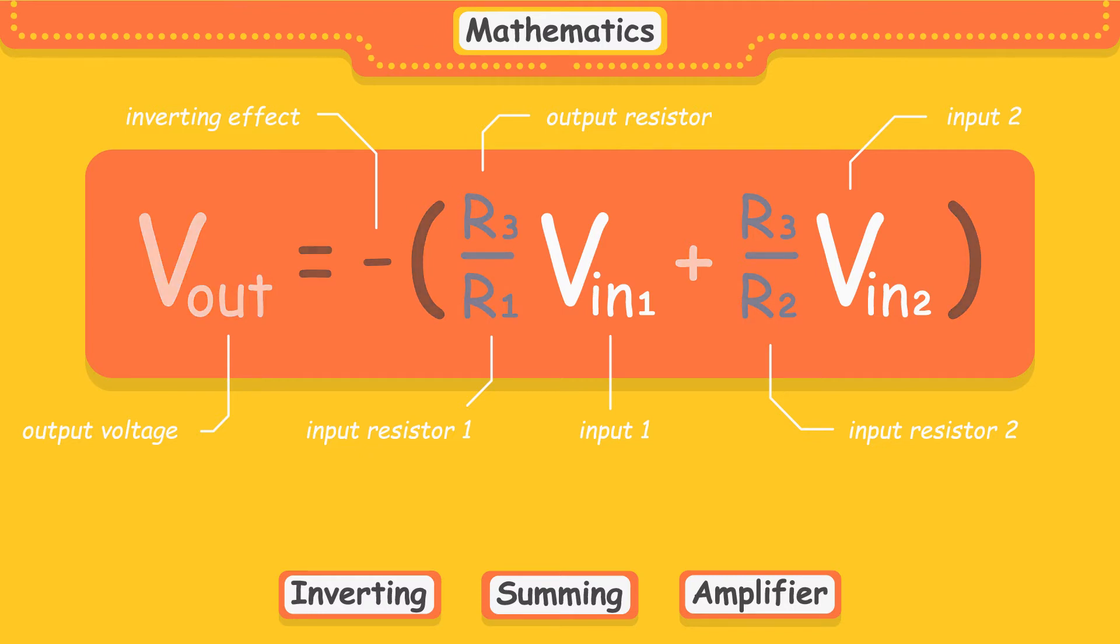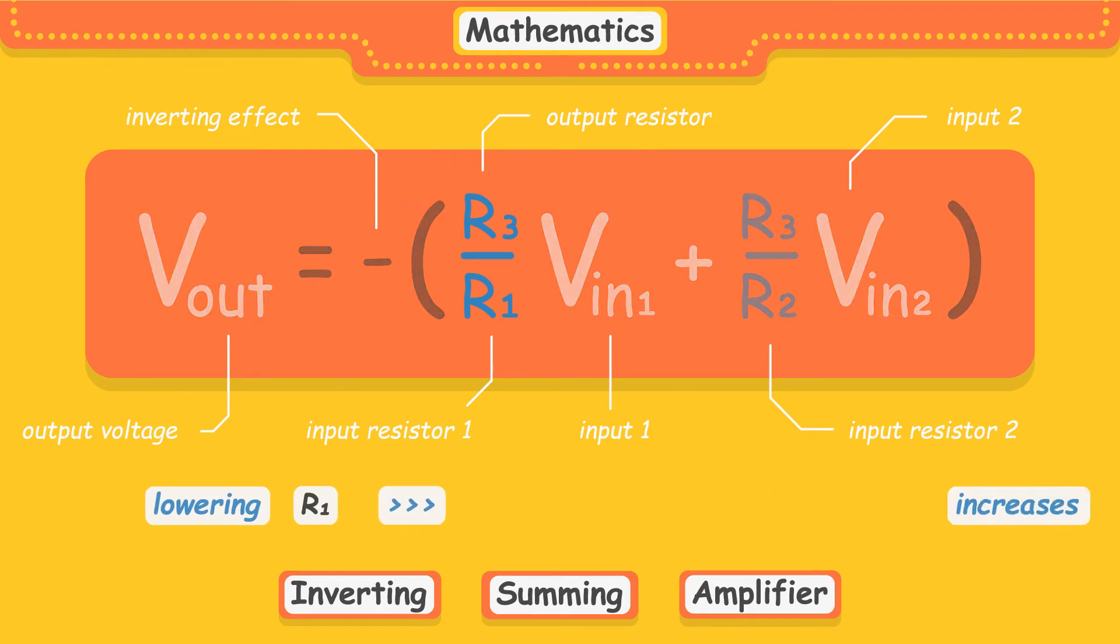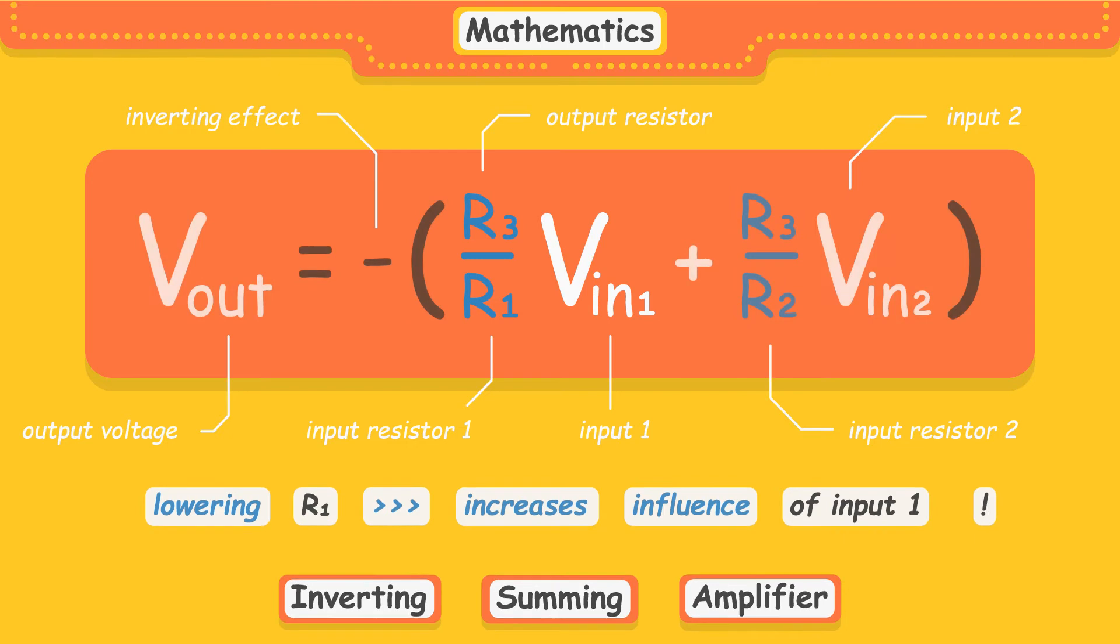What's important is that the input signals can be scaled by adjusting the values of the input resistors relatively to the feedback resistor. For example, we could lower the value of the first input resistor to increase the influence of signal 1 a little more.